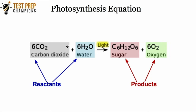We're taking these two things on the left-hand side of the reaction — carbon dioxide and water — and everything on the left-hand side of the reaction, we call the reactants. These are going to react in the presence of light, and they're going to form sugar or glucose and oxygen. These are our products — everything on the right-hand side of this equation is what we call products.